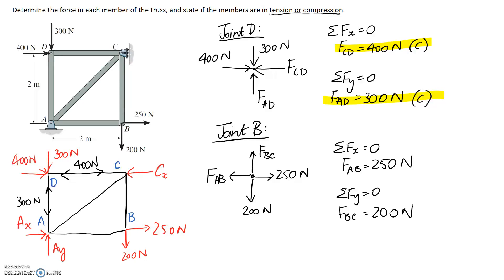Now we need to think about the compression or tension of the member. So FBC is pulling away from the joint, so this represents a tension member. Same thing with FAB, it's pulling away, so it's going to be in tension. So there's another two answers.